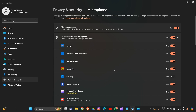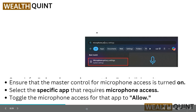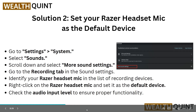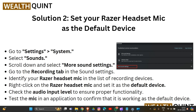That's how you apply the first solution — enable microphone access on your apps. Now we are going to solution two: set your Razer headset mic as the default device. Simply go to your Settings.